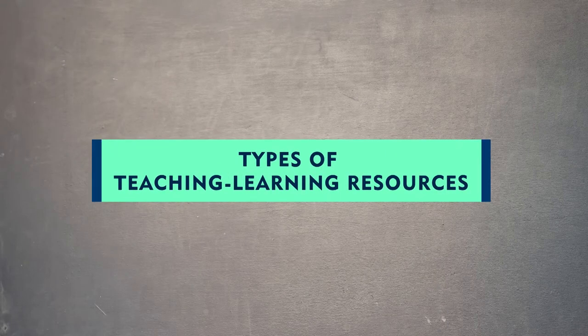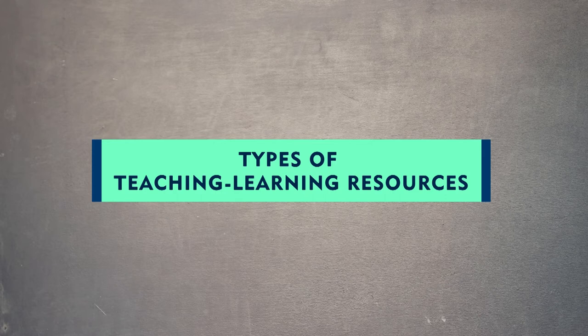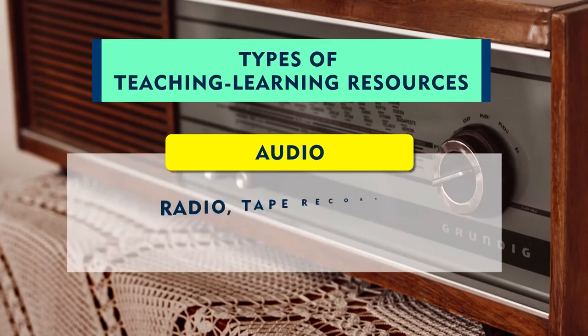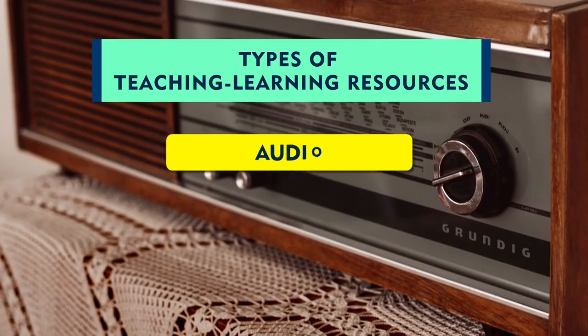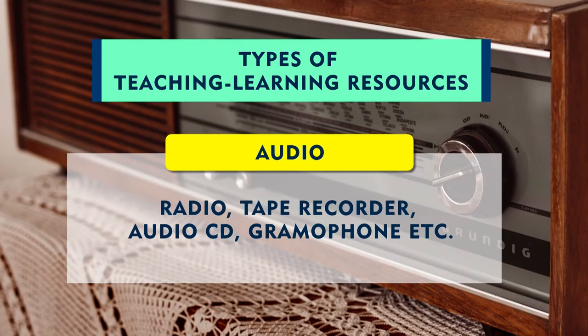If these are the benefits of teaching learning resources, then what are the types? Broadly, teaching learning resources are categorized into three categories: audio resources, visual resources, and audio-visual resources. Audio resources are those used by learners to learn about any concept by listening. So radio is an audio resource, as are tape recorders, audio CDs, gramophone, and nowadays podcasts. All these are audio resources for learners.